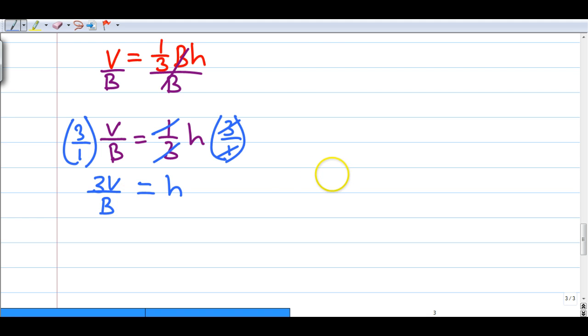Or I can flip their positions and say H equals 3V over B. They mean the same thing.